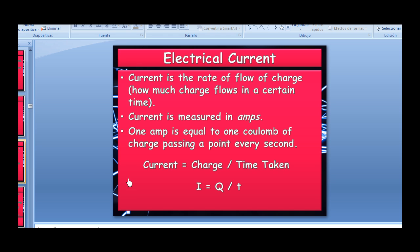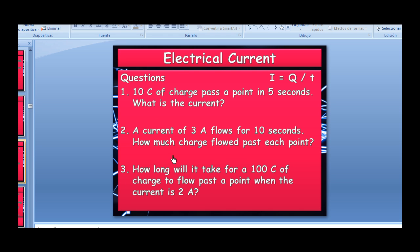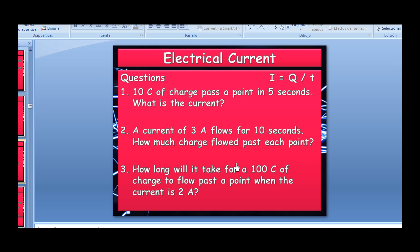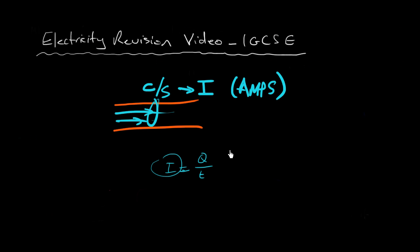Here are a couple of examples. First: 10 coulombs of charge pass a point in five seconds — what is the current? The equation is i equals q over t. They ask for the current, the charge is 10 coulombs, the time is five seconds, so 10 divided by 5 equals 2 amps.